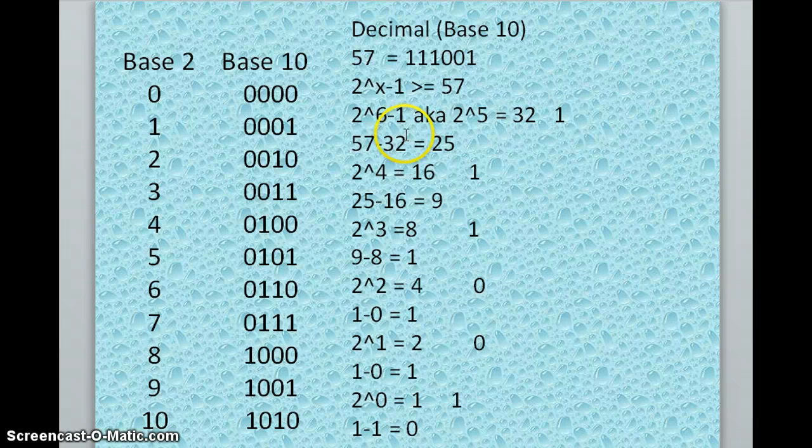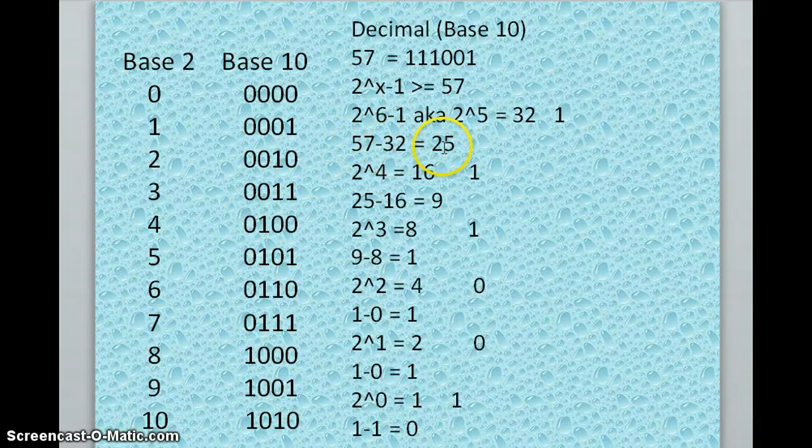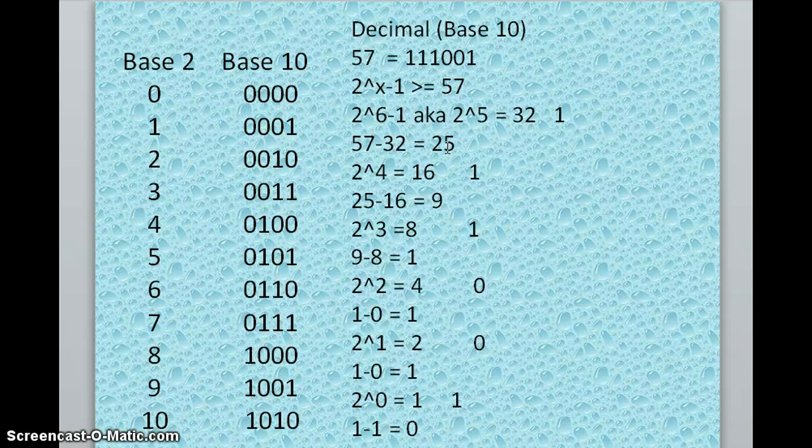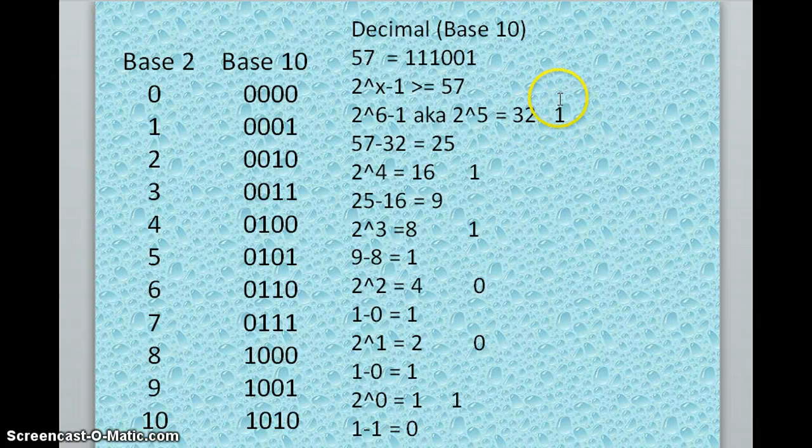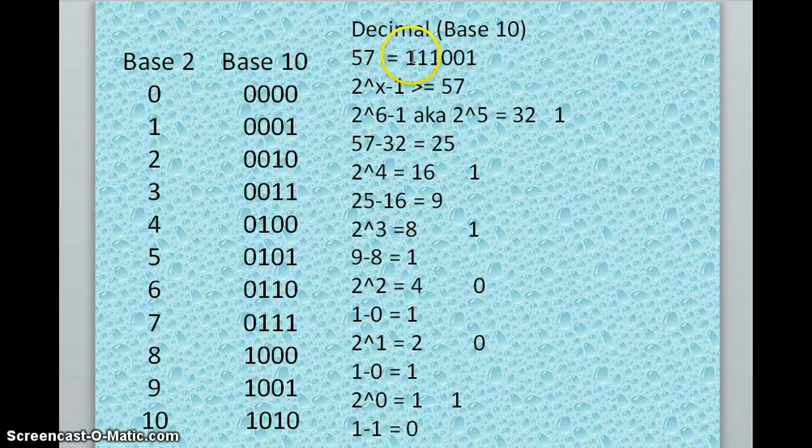So if we subtract, we'll see 57 minus 32 is 25, so it is greater than or equal to 0. So that means we're going to use it. We'll put a 1 to represent it, and we'll put it in our first place.